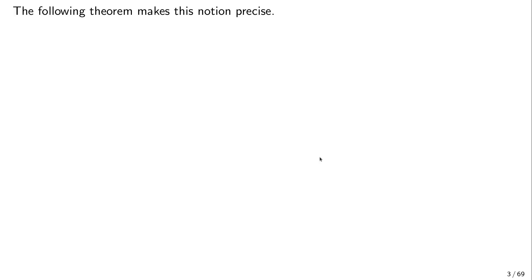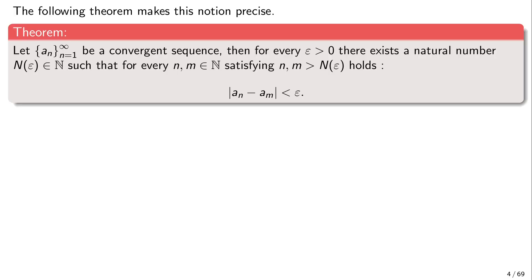We have the following theorem which makes things precise. Suppose that we have any convergent sequence of real numbers. Then for every positive epsilon, there exists a natural number N(ε) such that for every two natural numbers n and m that are bigger than N(ε), the distance between elements a_n and a_m is smaller than epsilon. This means the distance between elements of the sequence that are far enough can be made as small as we please.